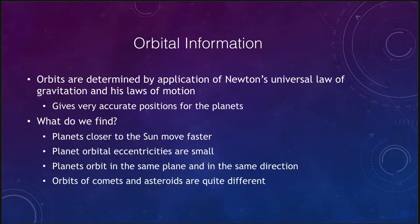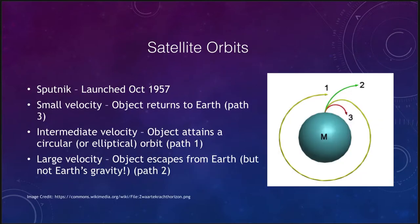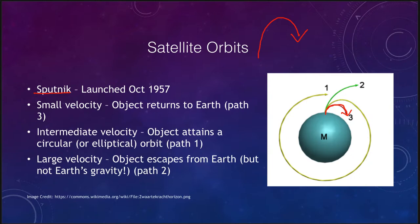Let's look at satellites and satellite orbits. One of the very earliest satellites was Sputnik, launched in October of 1957, so we have had satellites orbiting Earth for many decades. To get something into orbit, you need the right velocity. If you throw a ball up in the air it doesn't go into orbit — it goes up, slows down, and comes back down. If you don't throw something with enough velocity, it returns to Earth.